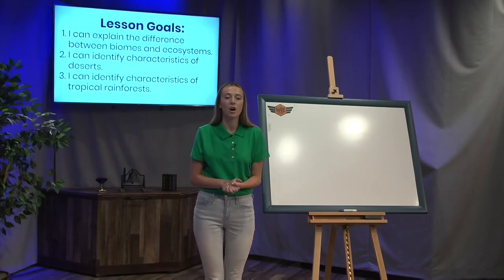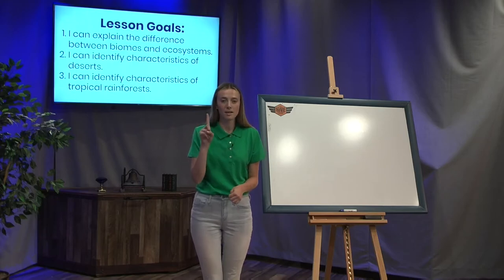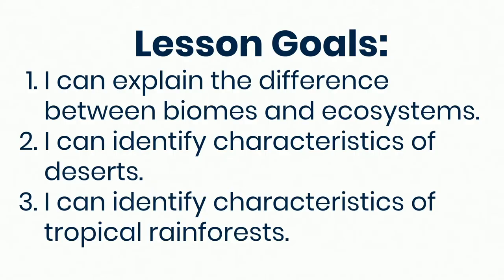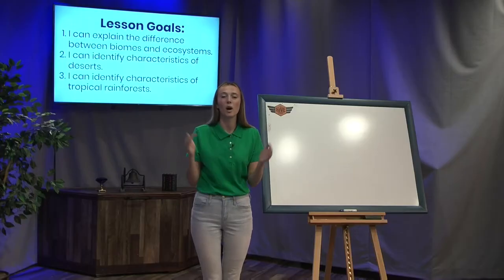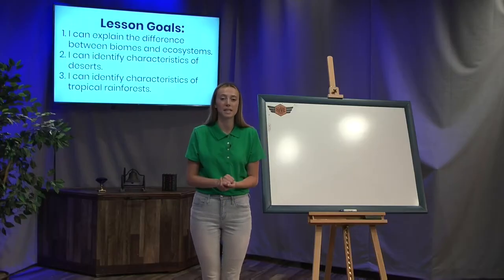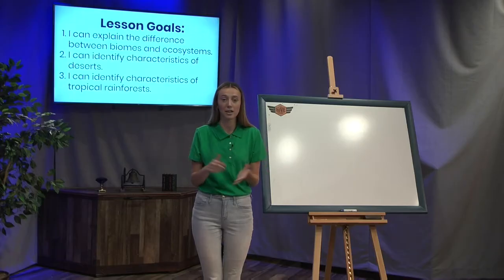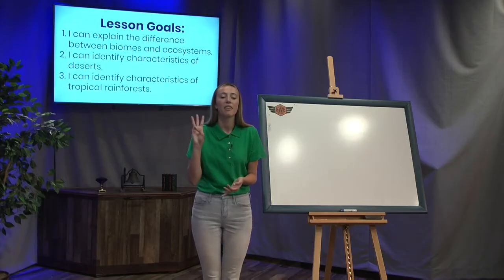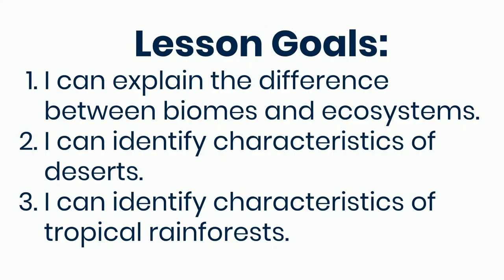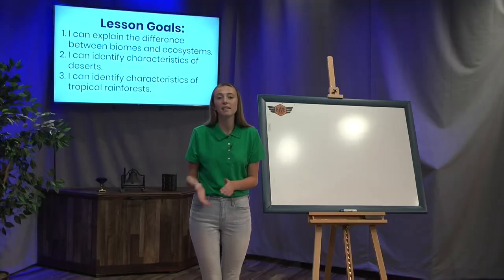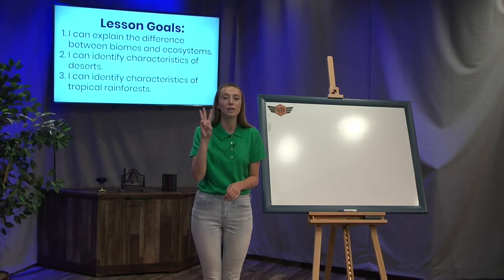Today, our lesson goals are: number one, I can explain the difference between biomes and ecosystems. Second, I can identify characteristics of deserts — remember what characteristics are. And third, I can identify characteristics of tropical rainforests. Hopefully, by the end of the lesson, you can do all three of these things.